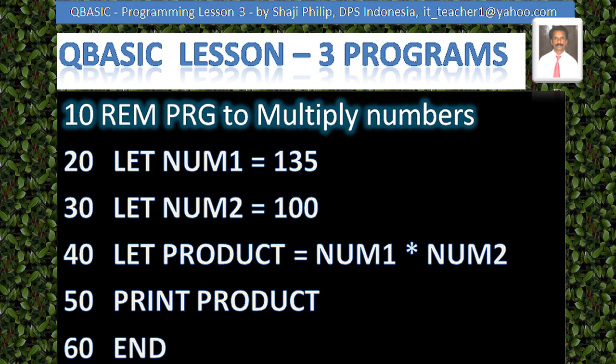Similarly, for a multiplication program, we do the same procedure. Assign 135 to num1 and 100 to num2. Then product = num1 * num2. We use the star symbol for multiplication — not 'into'. There is no 'into' symbol; the star symbol is used for multiplication in any computer language. The answer is stored in the variable product. Then print the product and end the program.